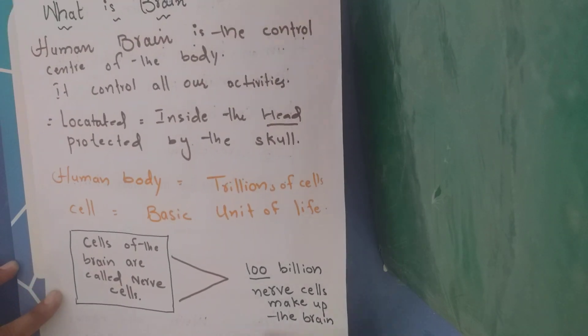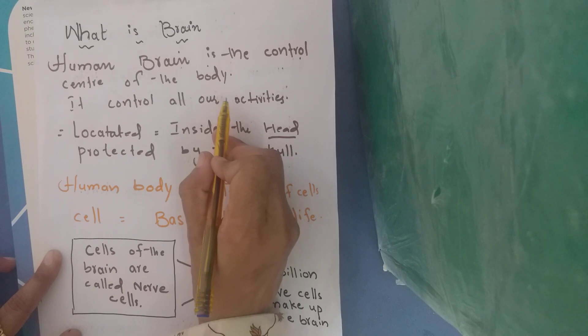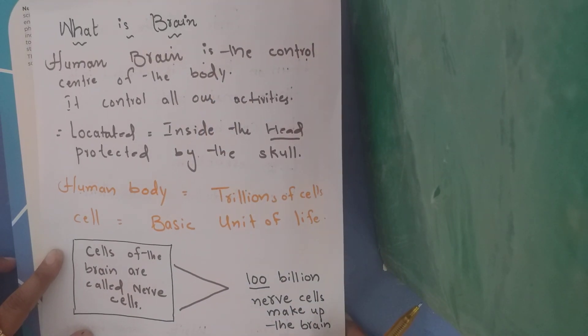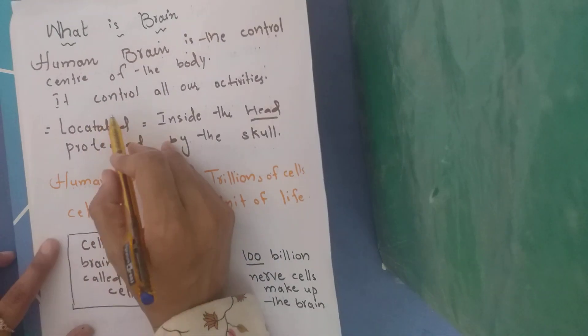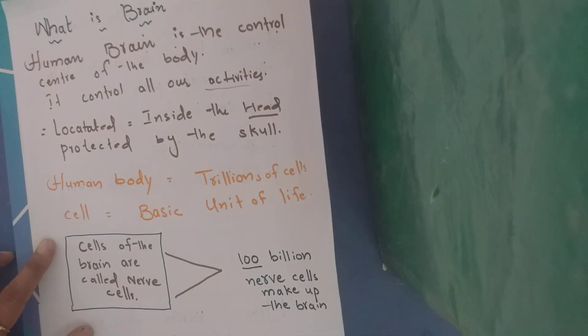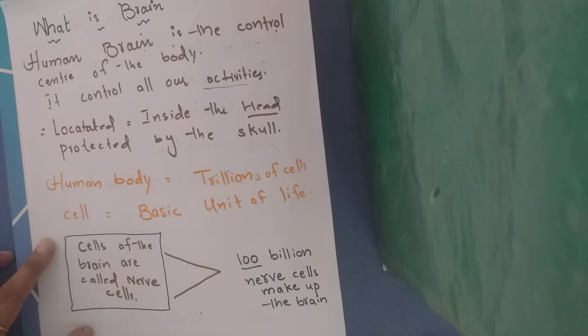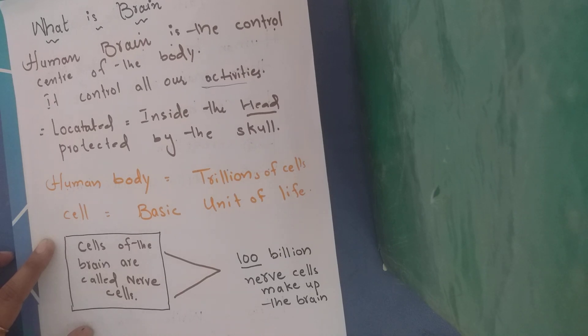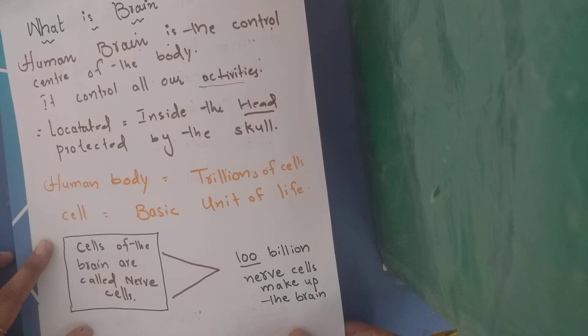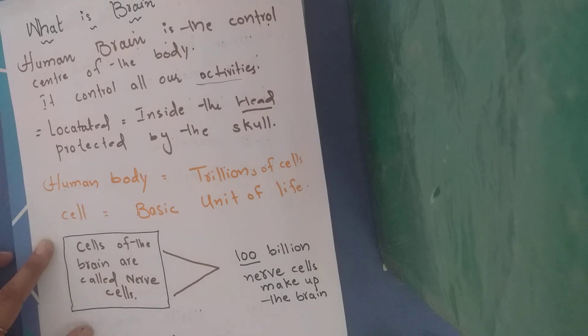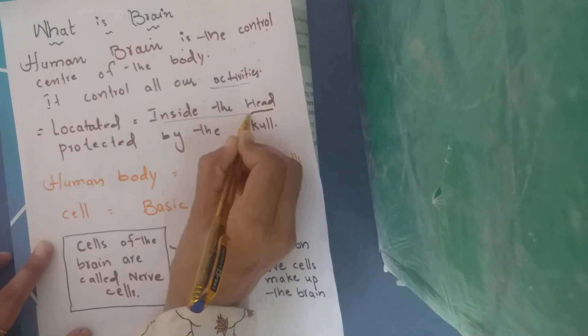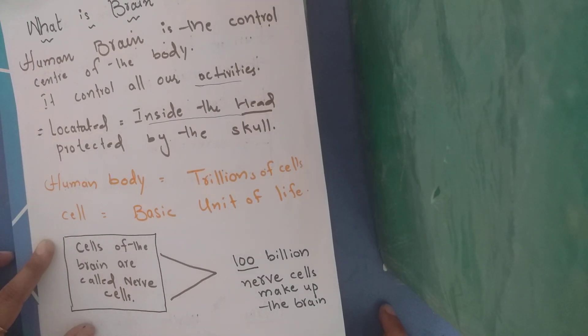What is brain and what does it look like? The human brain is the control center of the body. It is located inside the head. The brain is located inside the head, protected by the skull.